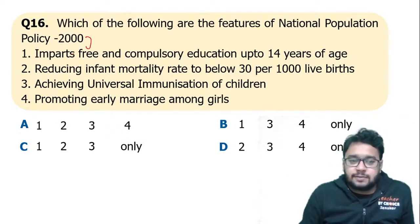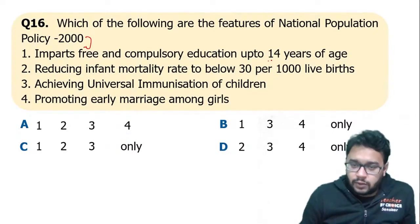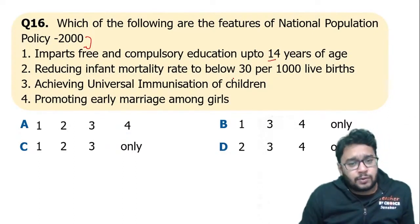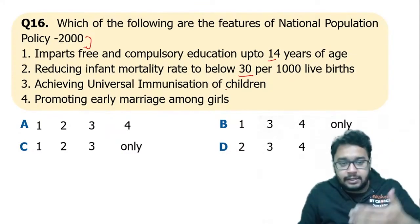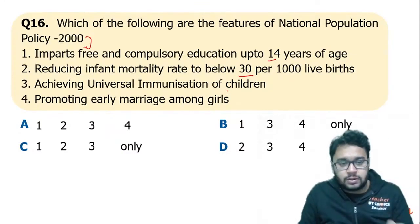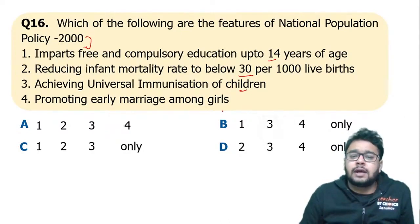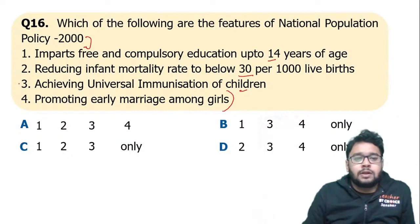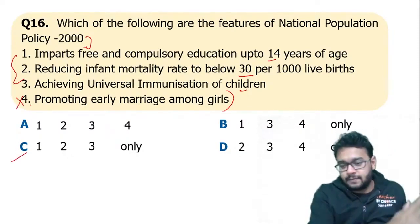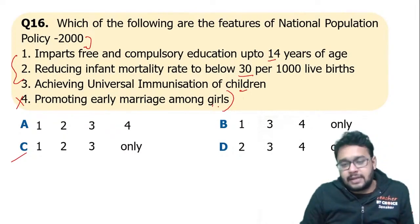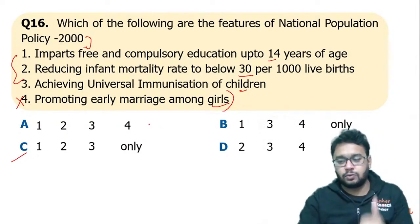Which of the following are features of the National Population Policy 2000? The options were: imparting free and compulsory education up to 14 years of age, reducing infant mortality rate to below 30 per thousand live births, achieving universal immunization of children, and promoting early marriage among girls. Statements one, two, and three are correct, but D is false — no policy promotes early marriage among girls. So C is the correct answer.